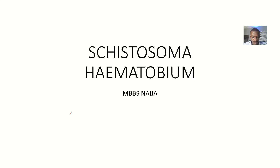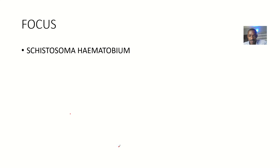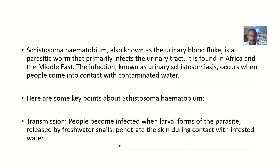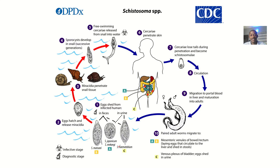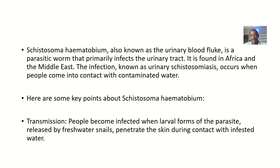Now for the next organism we should be looking at is Schistosoma hematobium. We have different types of Schistosoma: Schistosoma mansoni, Schistosoma japonicum, and Schistosoma hematobium. We'll look at the transmission, basically the life cycle overview, the health impact — what are the different problems this organism can cause — and we'll also look at the risk of developing cancer if you have this parasite.